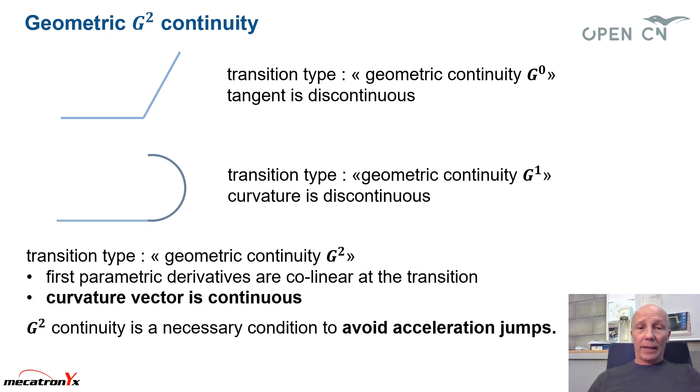What we like is a G2 continuity. And for the G2 continuity, we have the first parametric derivatives, which are collinear and the curvature, which is continuous. And with this, we avoid jumps in acceleration.